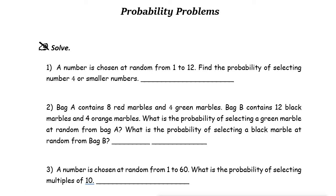Probability problems. Probability is the likelihood of something happening in the future. It's expressed as a number between zero and one. Zero means that something can never happen, and one means that it will always happen.